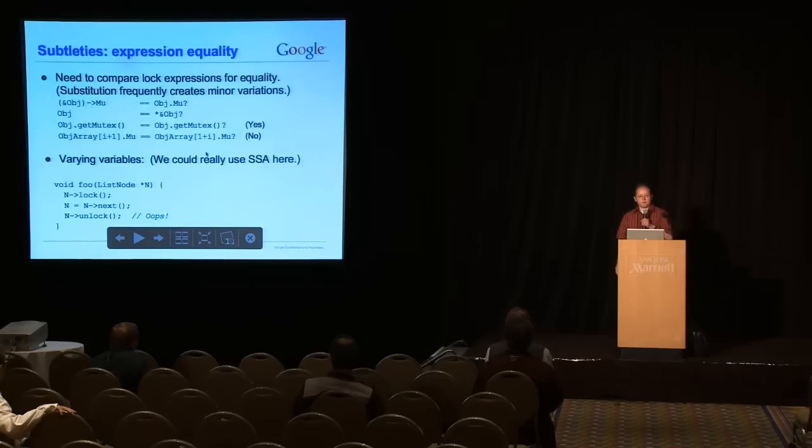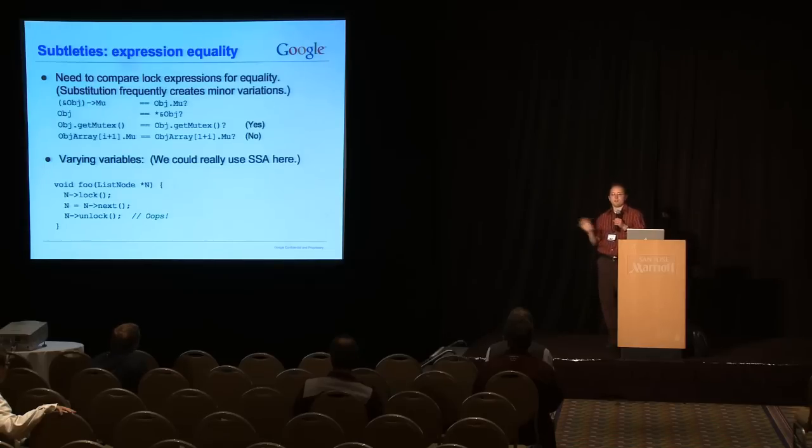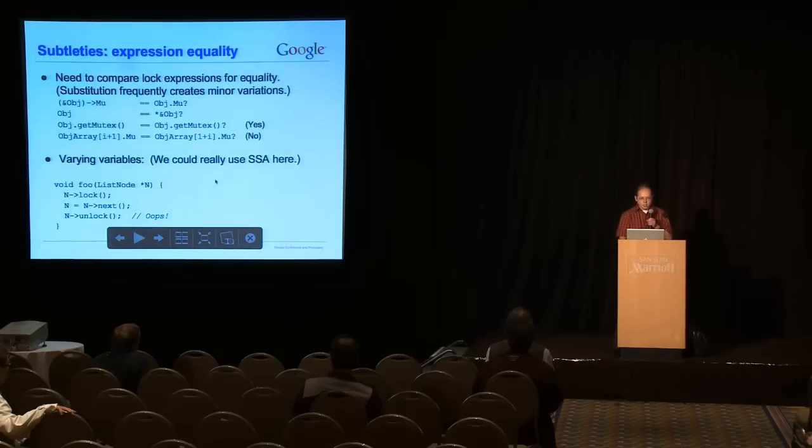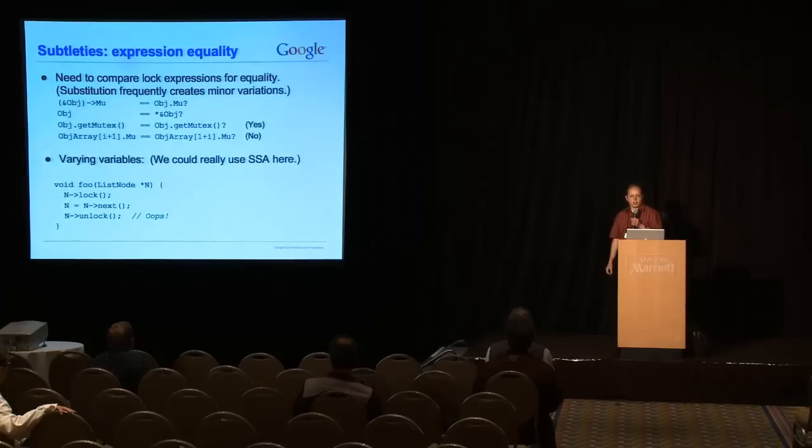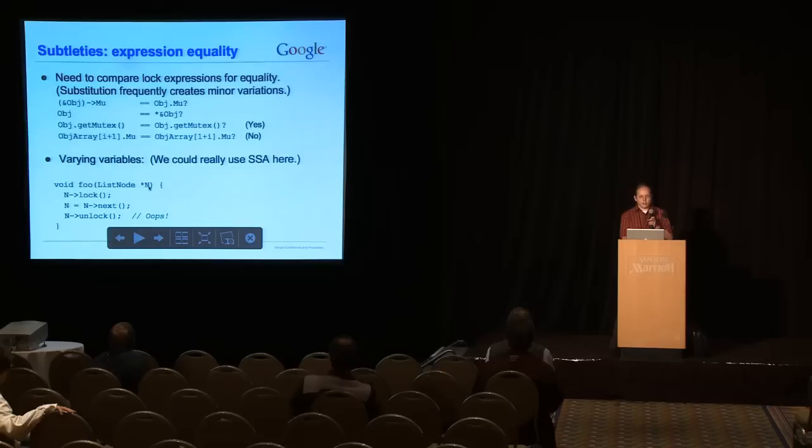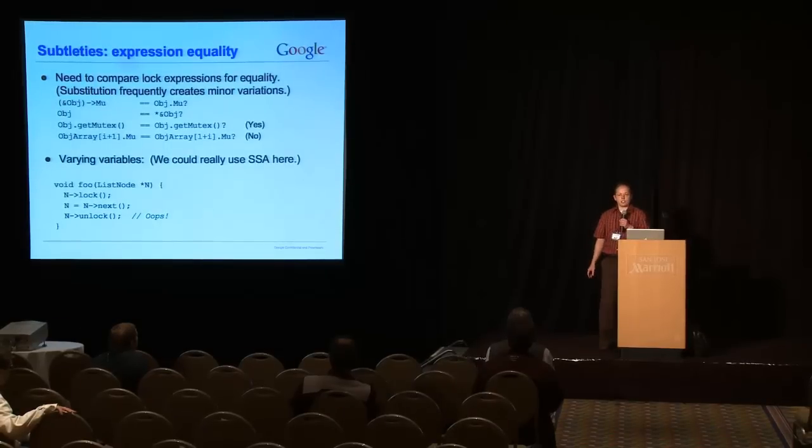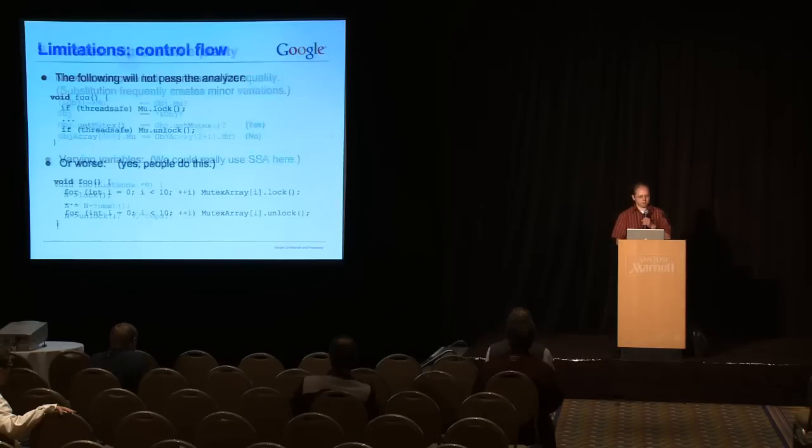You could try to go further and say, does an array with index i plus 1 equal an array with index 1 plus i? We don't do anything like that. Those are going to be treated as different expressions. You have to draw the line somewhere. A second issue with expression equality, and this is a difference between the GCC and Clang implementations. Is right now, I'm just looking at variables. But as you might imagine from the name, variables can vary. So if you have in lock and in unlock, but you modified in in the middle, the Clang version currently does not detect this. The GCC version does, because the GCC version runs on code after it's been converted to SSA form. So SSA would really make life easier here.